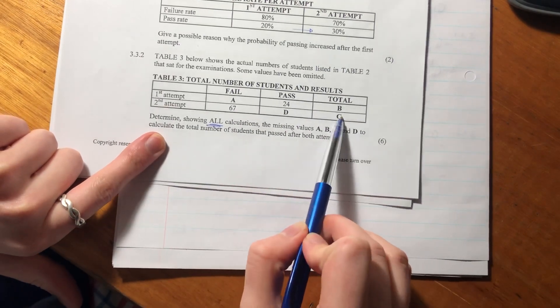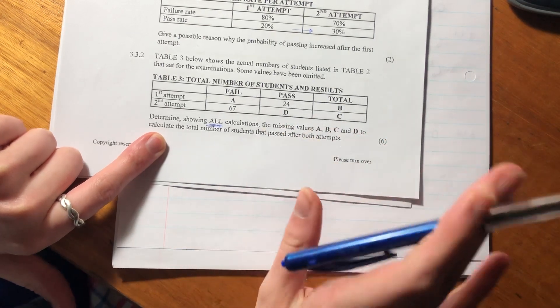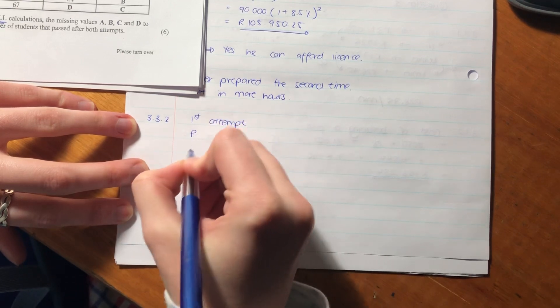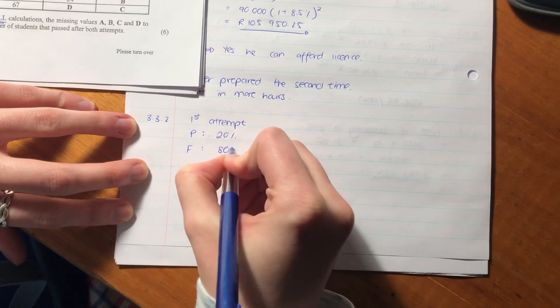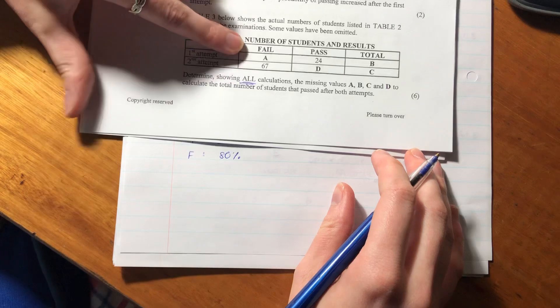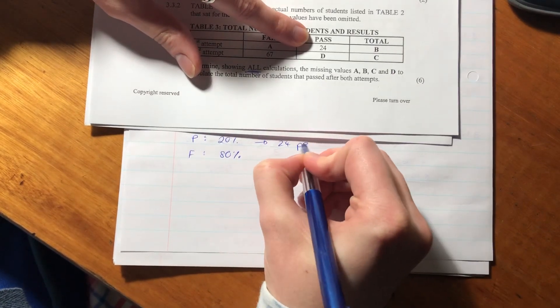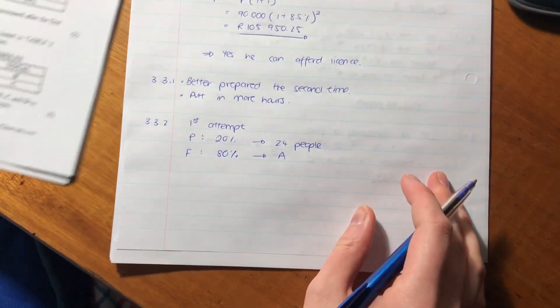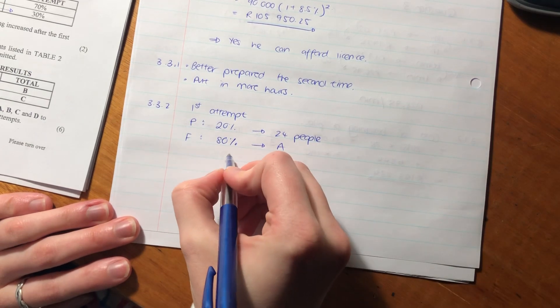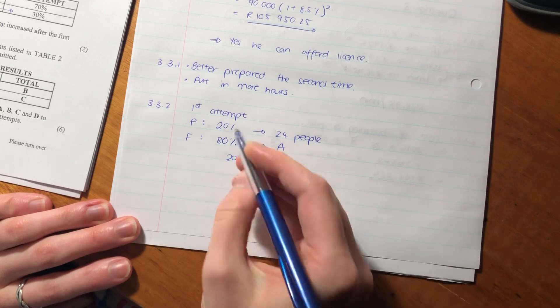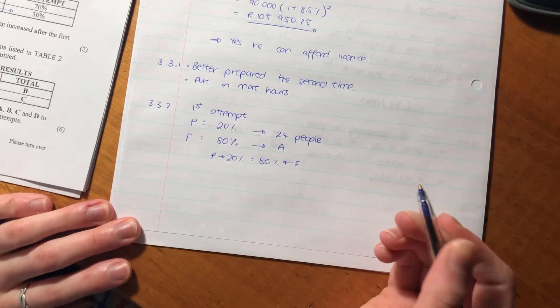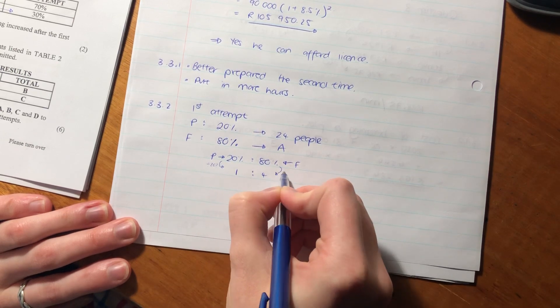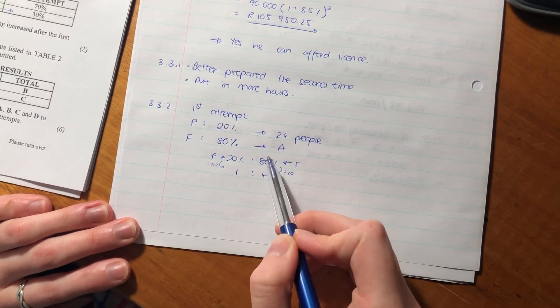We would expect the number of people who did the second attempt to be less than the number who did the first attempt. For the first attempt, we have passing or failing: 20% passed and 80% failed. From this table, we know that 20% actually represents 24 people. We have to figure out what A is - how many people failed. We could say what is the ratio of 20% to 80%, and if we divide both by 20%, we get the ratio as 1 to 4.